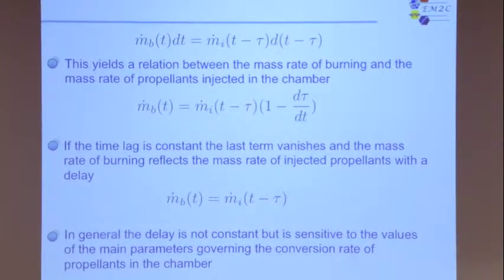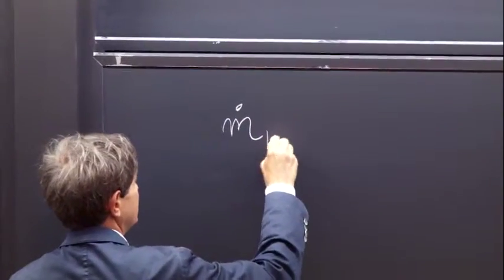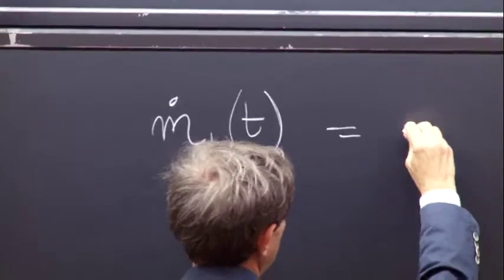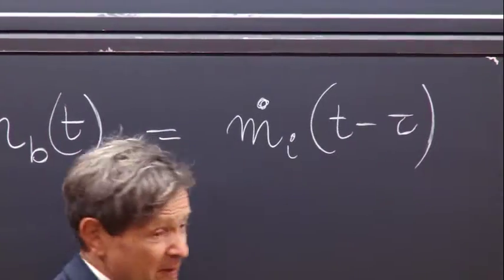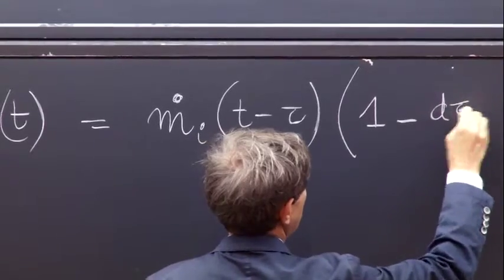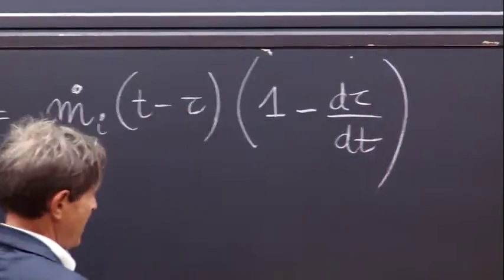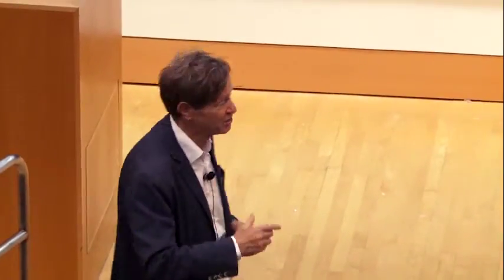As a consequence, what you get in terms of burning at time t should equal what has been injected at time t minus τ, times the change in time itself. The first equation we can write is that the mass being burned, ṁ_b at time t, is equal to ṁ_i at time t minus τ. Now, if τ were exactly constant, you would have just that. But because τ can change with time itself, you have in addition a factor of 1 minus dτ/dt.